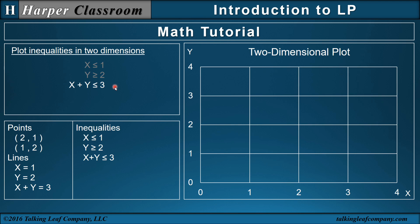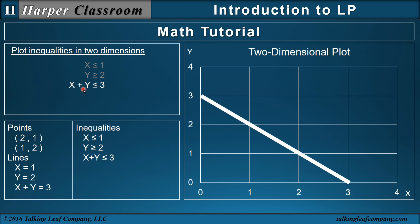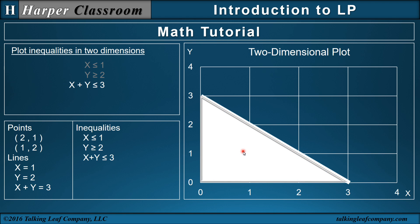The inequality x plus y is less than or equal to 3 — the boundary is the equation x plus y equals 3. If I pick one point on one side, let's say (0, 0), well 0 plus 0 is less than 3. So the lower left half space represents that inequality.